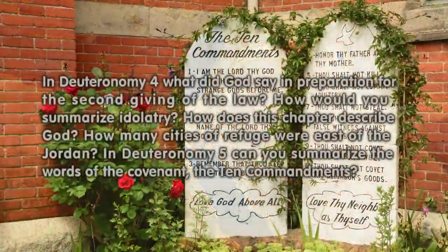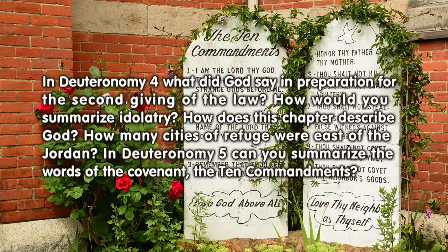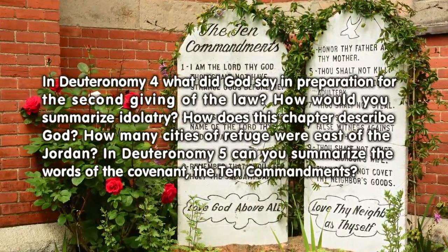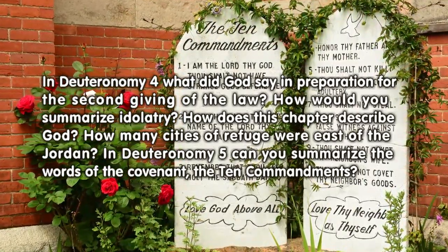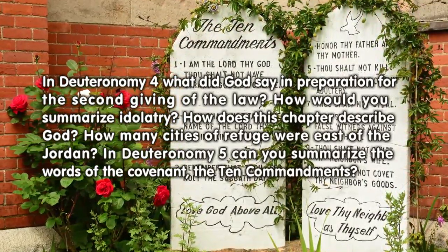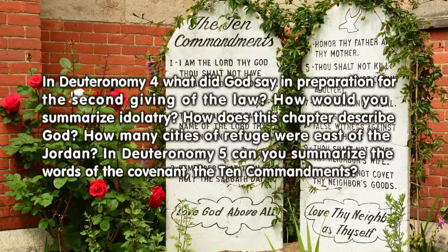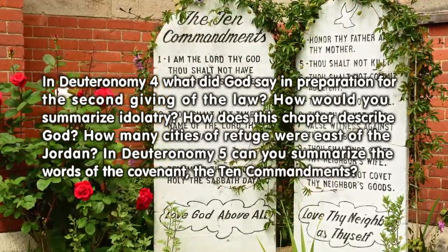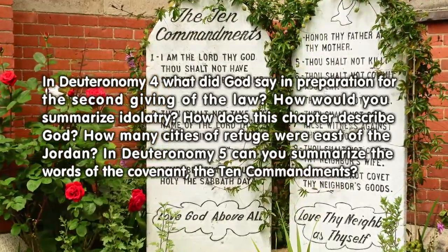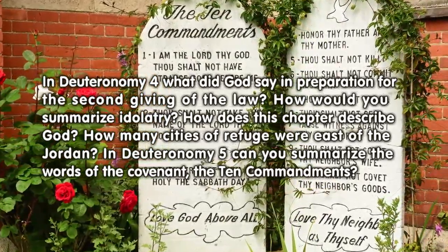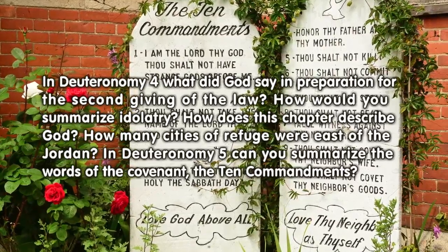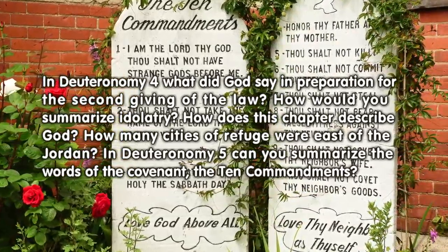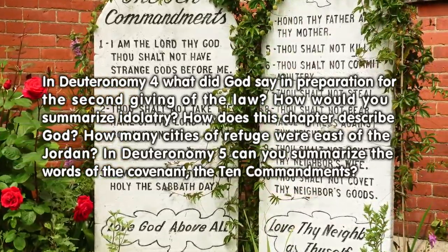In Deuteronomy 4, what did God say in preparation for the second giving of the law? How would you summarize idolatry? How does this chapter describe God? How many cities of refuge were east of the Jordan?